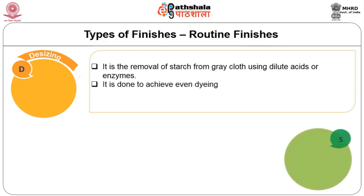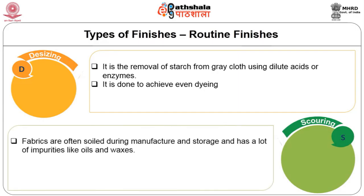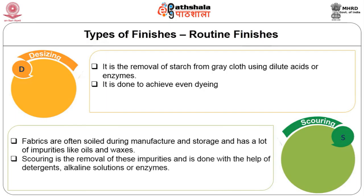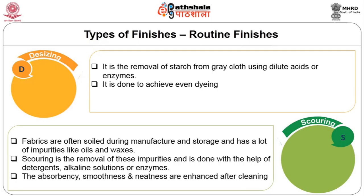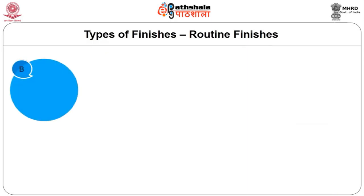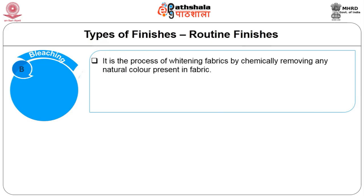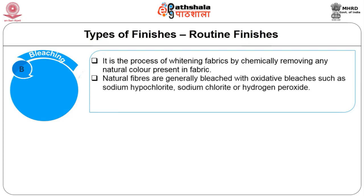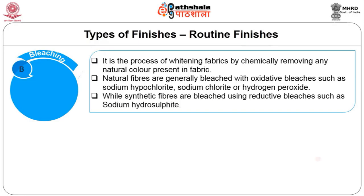Scouring or cleaning — fabrics are often soiled during manufacture and storage with impurities like oils and waxes. Scouring is the removal of these impurities using detergents, alkaline solutions or enzymes; absorbency, smoothness and neatness are enhanced after cleaning. Bleaching is a process of whitening fabrics by chemically removing natural color. Natural fibers are bleached with oxidative bleaches such as sodium hypochlorite, sodium chloride or hydrogen peroxide, while synthetic fibers are bleached using reducing bleaches such as sodium hydrosulphite.